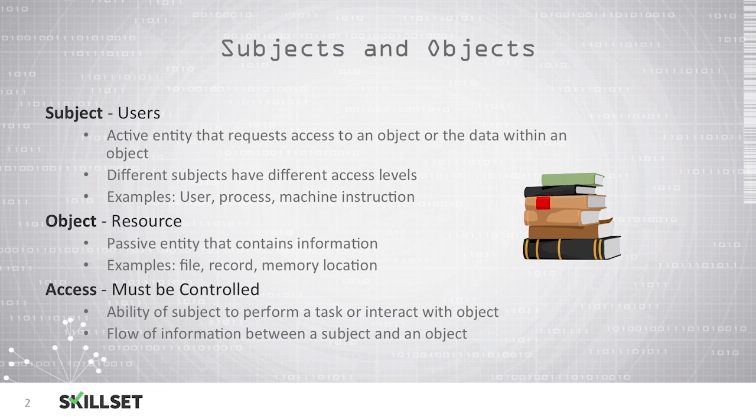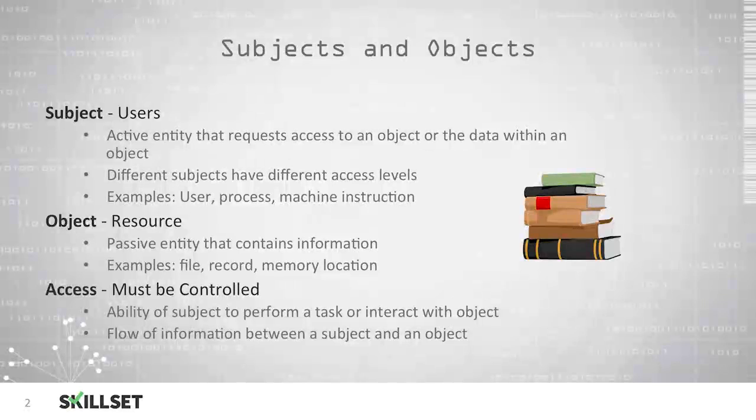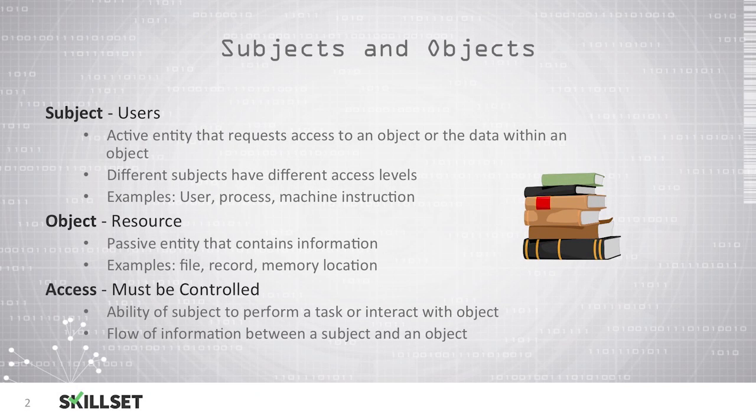An object is a resource. These are passive entities that contain information that a user wants to access. Some examples here are a file, a record in a database, or perhaps a memory location. An access is the flow of information between the subject and the object. It is basically the ability of a subject to perform a task or some interaction with an object. It's important to make sure that we are controlling access between our subjects and our objects to make sure that we do not have unauthorized individuals accessing resources that they should not be accessing.